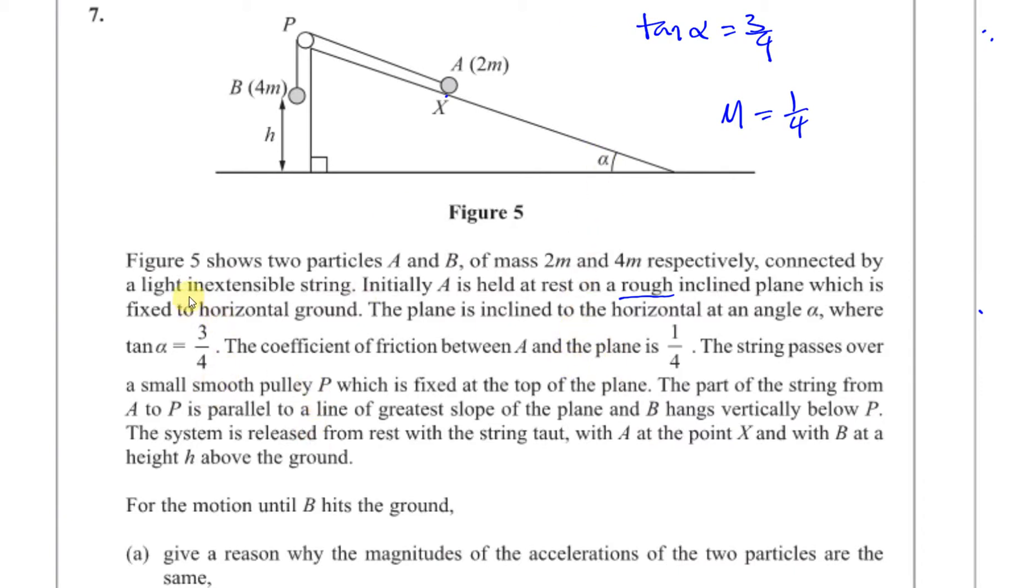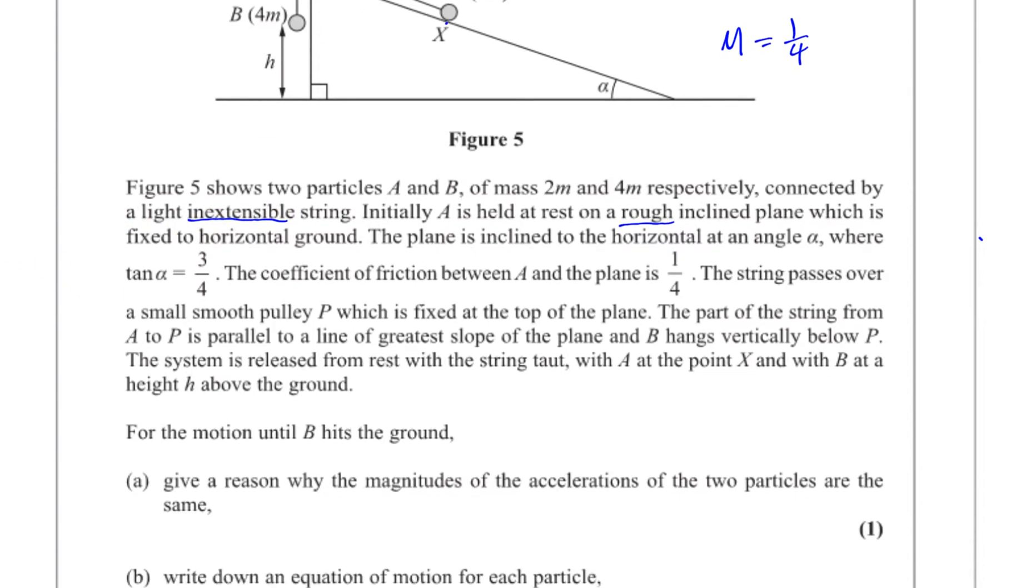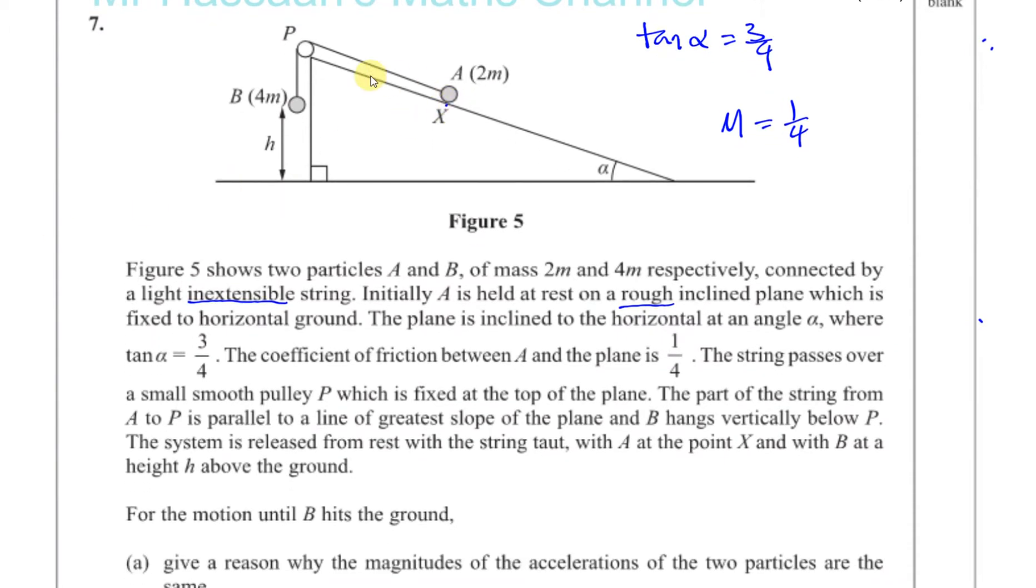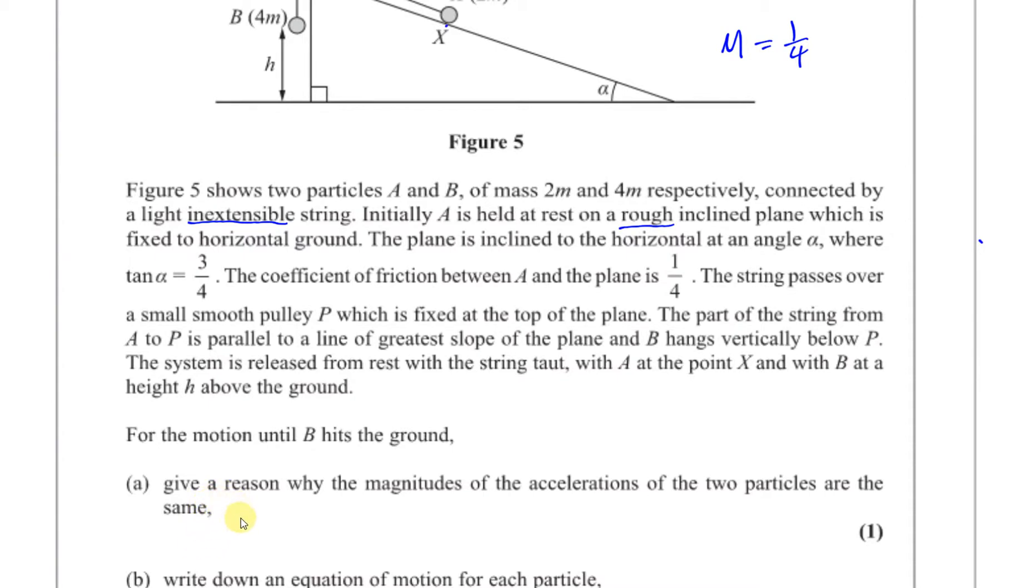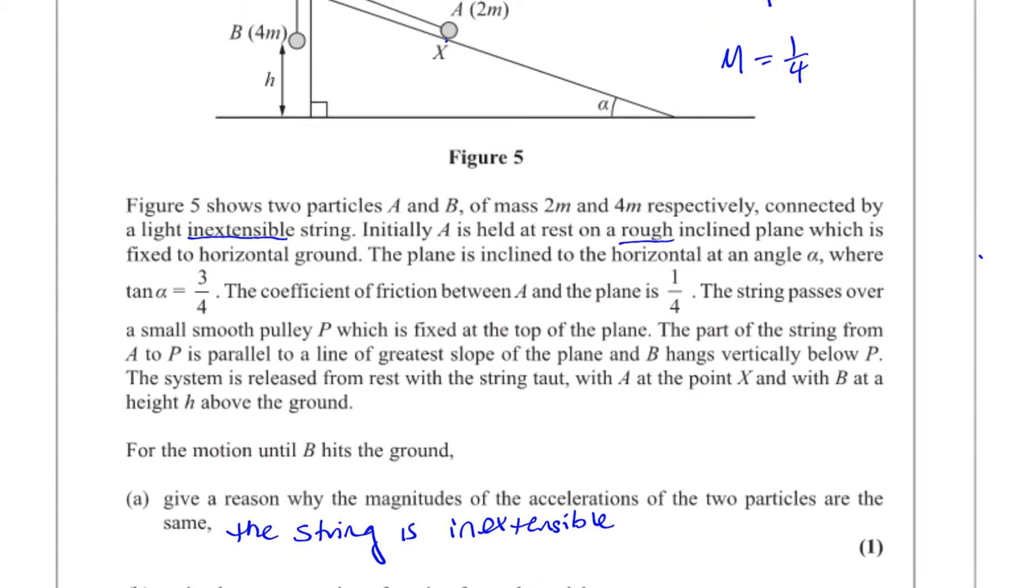We kind of already answered that question when we were reading the question. It said inextensible. The string is inextensible, meaning that every particle attached to it will have the same acceleration. So it's not like the string is stretching more in one part than another, so the acceleration of one part will be different than the other. The reason why A and B both have the same magnitude of acceleration is because the string is inextensible. So that's fine for answer. The string is inextensible. No excuses for making a spelling mistake when it's written here, so you have to copy that word down. No need for a thousand-word essay to answer this question either.